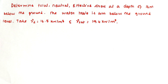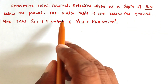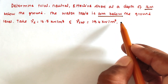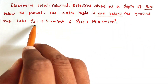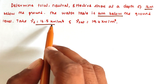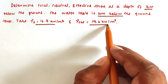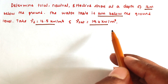The problem is to determine the total, neutral, and effective stress at a depth of 16 meters below the ground surface. The water table is 4 meters below the ground surface. Gamma d (dry unit weight) is 16.5 kN/m³ and gamma saturation is 19.4 kN/m³.